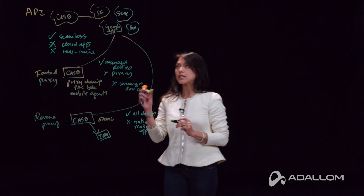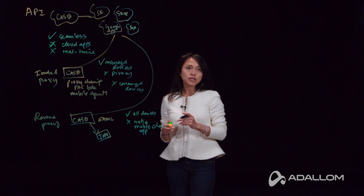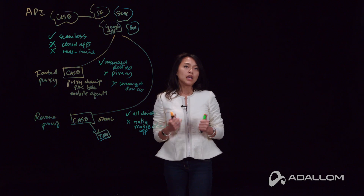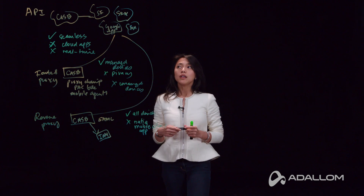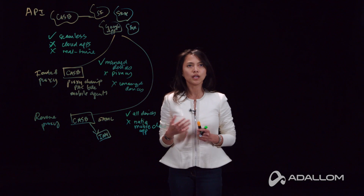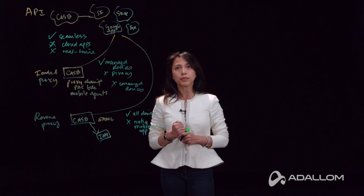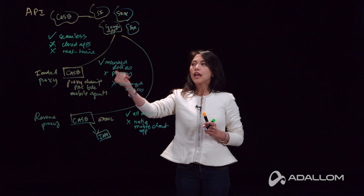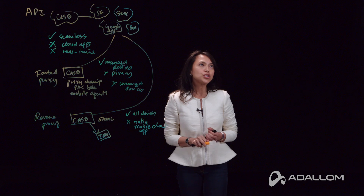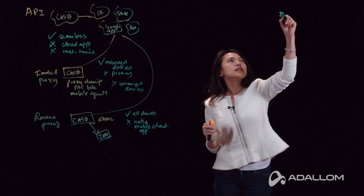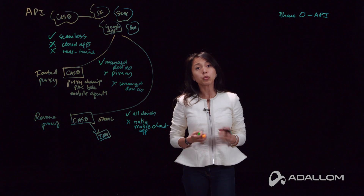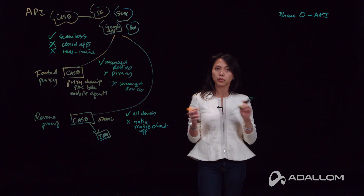As you can see, there are limitations and advantages of all of these different deployment modes. What do we advocate? If you are picking a cloud access security broker, you should pick a platform that gives you all three options. That's what we've done with the AdLom approach — we support API mode and also have a smart proxy, which is a combination of forward and reverse proxy. We advocate starting with API as phase zero, because it can be deployed in less than eight minutes and is completely non-intrusive.